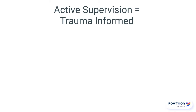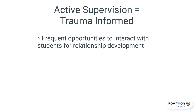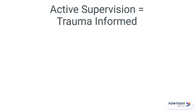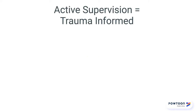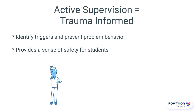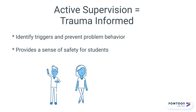When you employ active supervision, you can create a trauma-informed classroom. Active supervision allows you frequent opportunities to interact with students and build relationships. Remember, just 15 seconds at a time is long enough to have a meaningful connection with a student. Employing active supervision will also help you identify triggers, prevent problem behavior, and provide a sense of safety for students who know you are looking, walking, and talking.